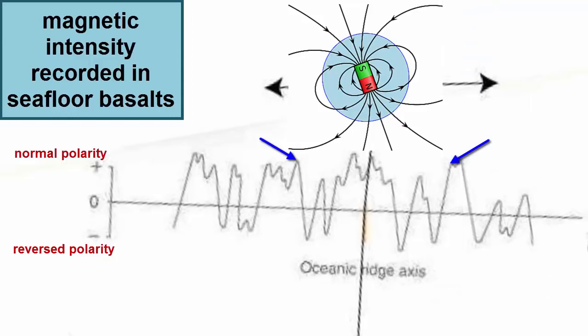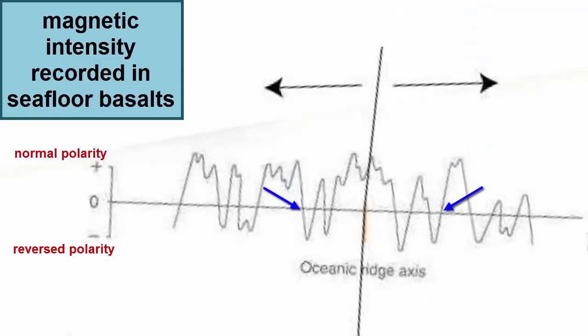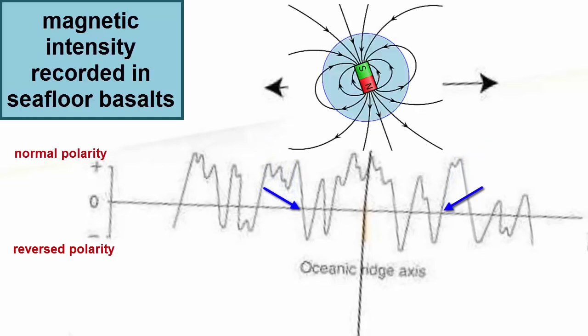As these graphs of intensity show, the strength of the magnetic field decreases and then hits zero before either starting up again and increasing in the same direction as before, or increasing but in the opposite direction.